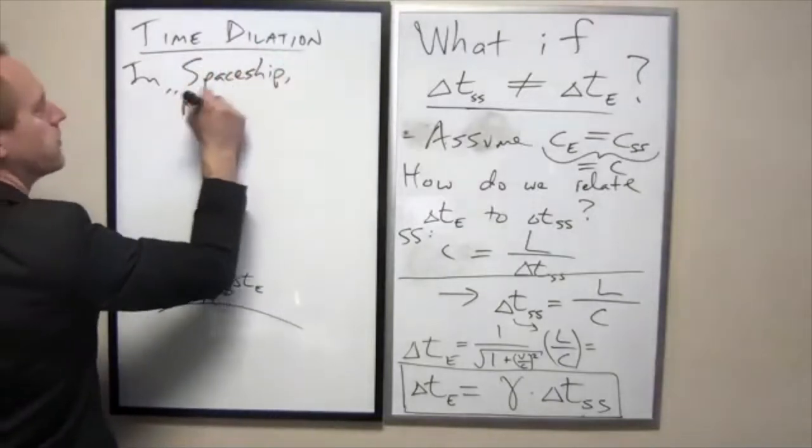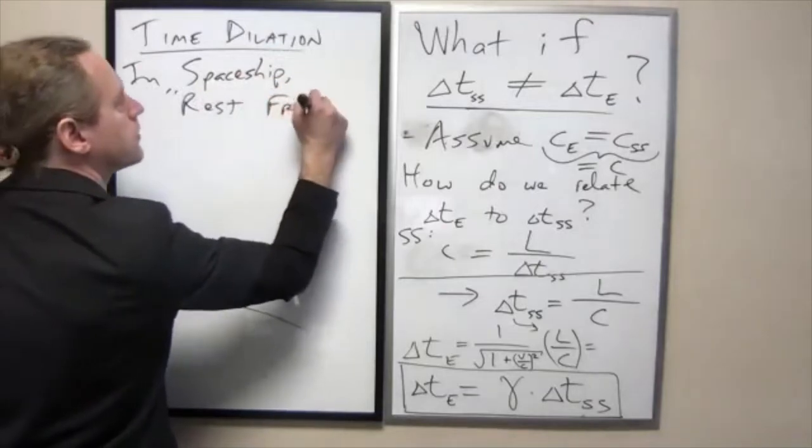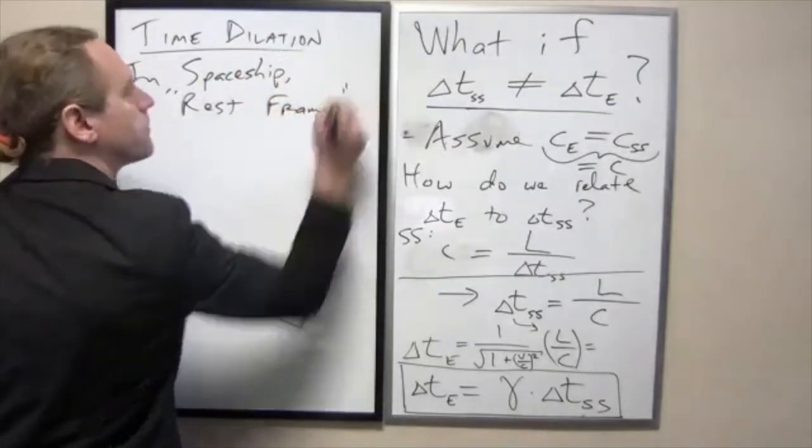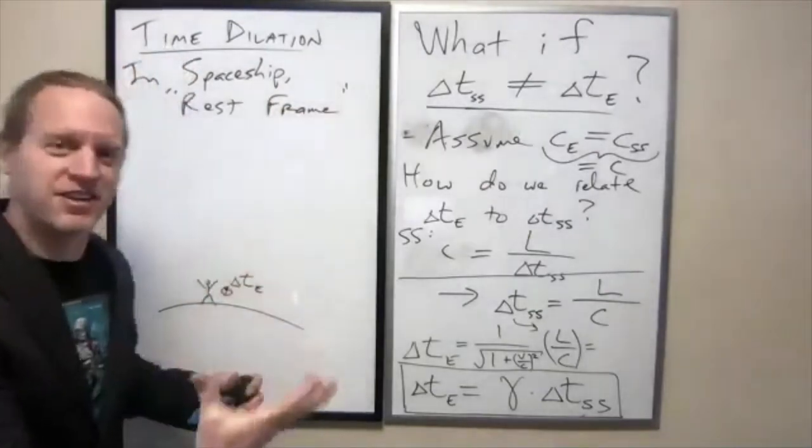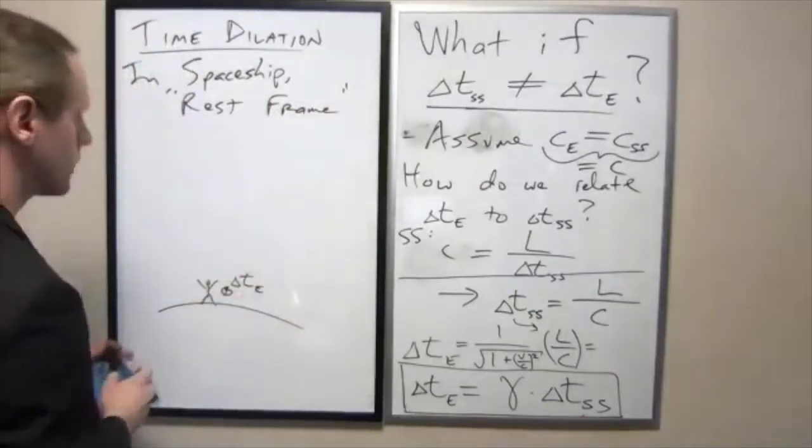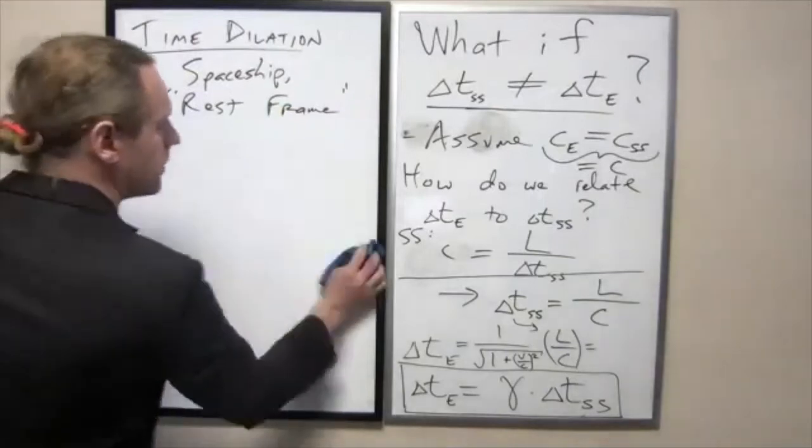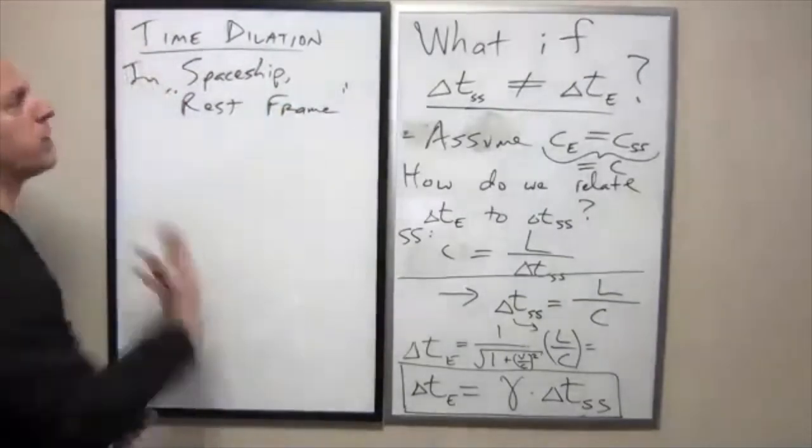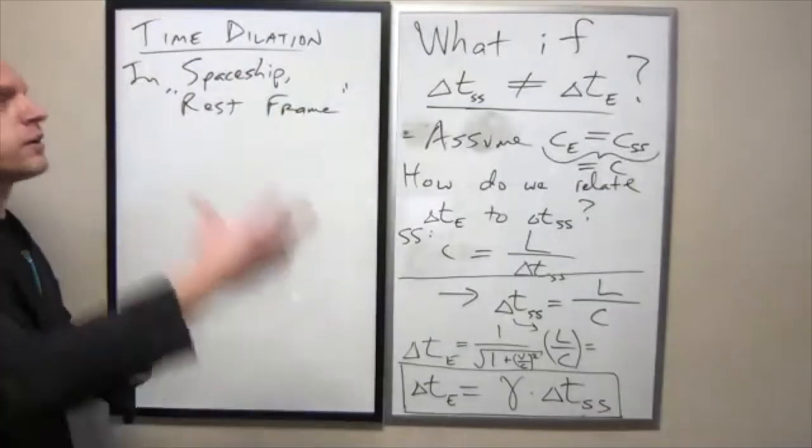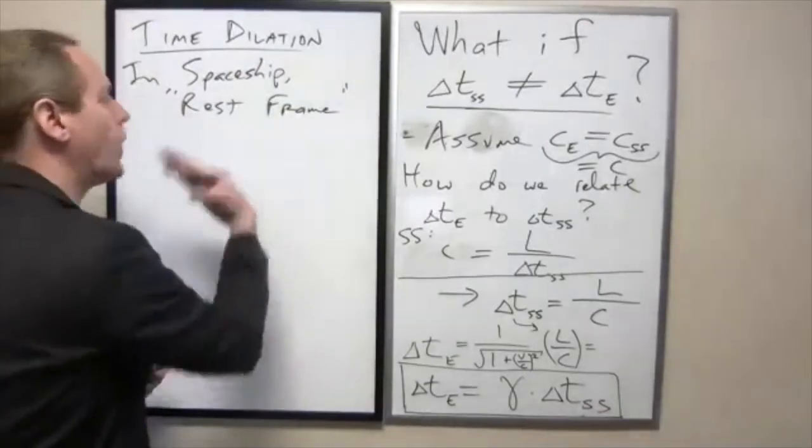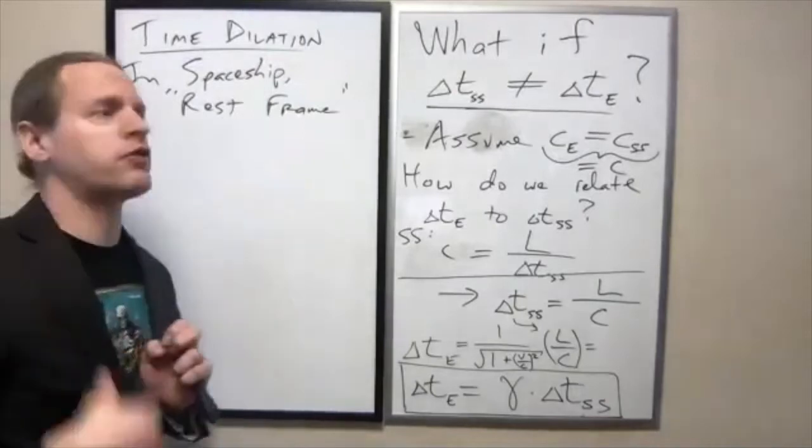Any other observer that sees the spaceship going by will see a non-zero velocity. So they're going to have a distinctly different view. And for that reason, this observer here, the spaceship observer, is what we call the rest frame observer. We call it the rest frame. So we see things in our own reference frame at rest relative to us. And turns out that what you measure in that reference frame is a unique point of view in the universe. No other observers in the universe are going to measure quite the same thing that you do.